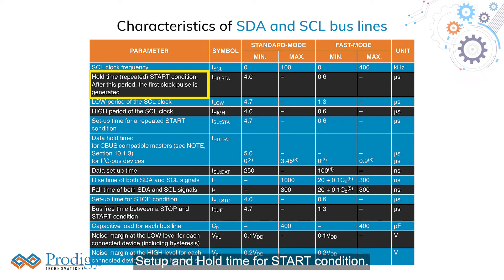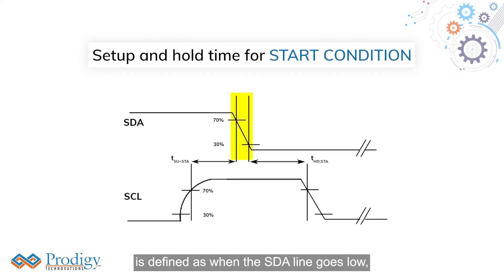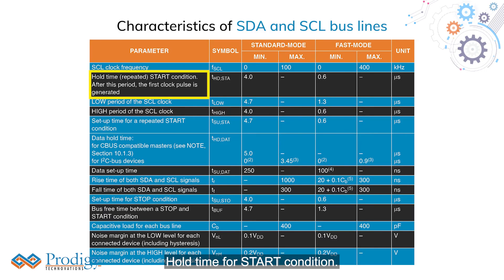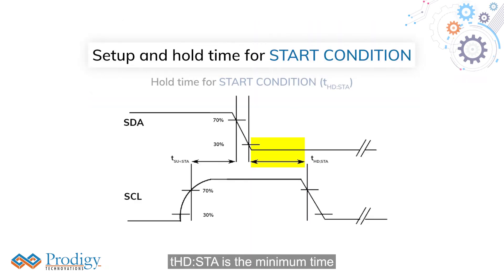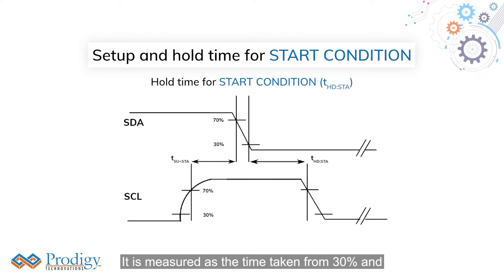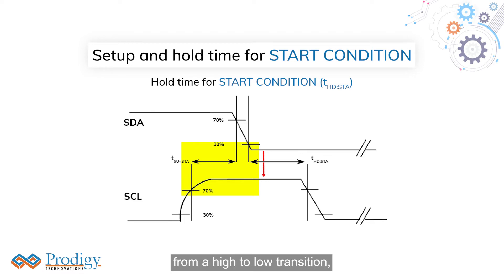Setup and Hold Time for Start Condition: Recall that the start condition is defined as when the SDA line goes low before SCL transitions low — that is, SDA transitions to a low state when the SCL line is high. Hold Time for Start Condition, THD STA, is the minimum time the data should be low before SCL goes low. It is measured as the time taken from 30% amplitude of SDA during a high-to-low transition, to 70% of the amplitude of SCL during a high-to-low transition.